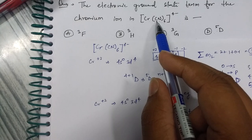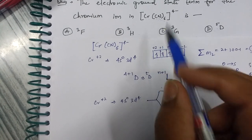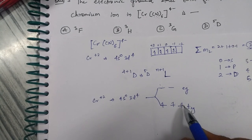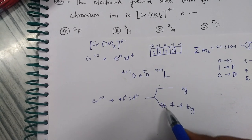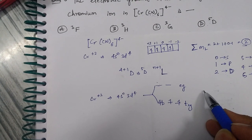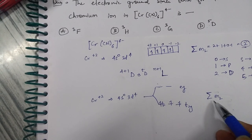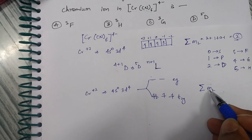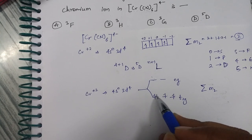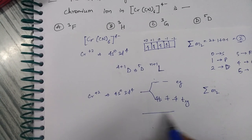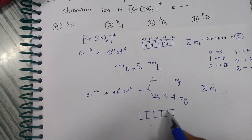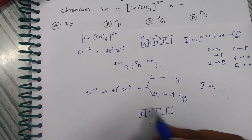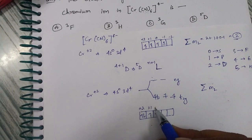The cyanide ion (CN⁻) is a strong field ligand, as you can learn from the spectrochemical series. Because it is strong field, the four electrons will not spread out — instead, three fill the t₂g orbitals singly, and the fourth pairs up in the lowest t₂g orbital. So we now have a paired electron situation to account for when calculating ΣmL.